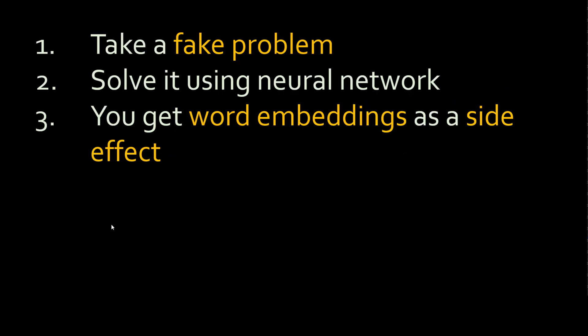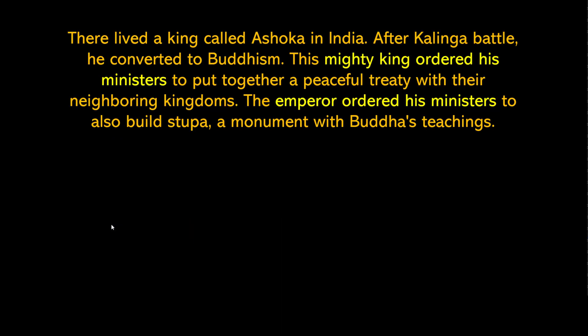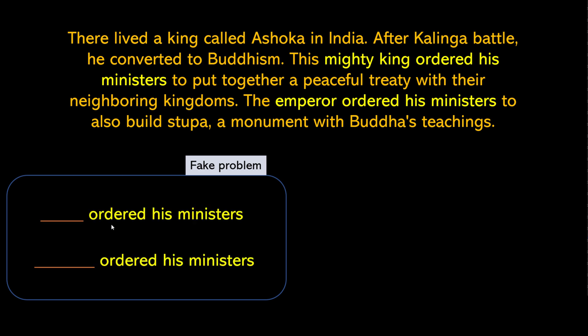What you do is take a fake problem and try to solve it using a neural network, and as a side effect you get word embeddings. The fake problem is: find the missing word in a sentence. Say there is a story of great king Ashoka — the king in India in ancient times. When you're reading this story, you take a fake problem which is to complete a sentence. For example, given 'this mighty king order his minister' or 'the emperor order his minister,' the missing word is king or emperor.